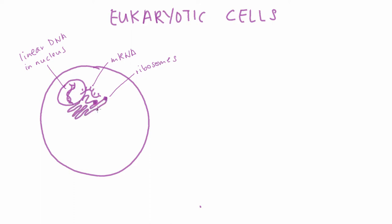In eukaryotic cells, ribosomes are attached to an organelle called the endoplasmic reticulum, or the ER. The rough ER, which is covered in ribosomes, forms a kind of highway to transport these new proteins around the cell. The smooth sections of the ER are actually involved in lipid synthesis instead.